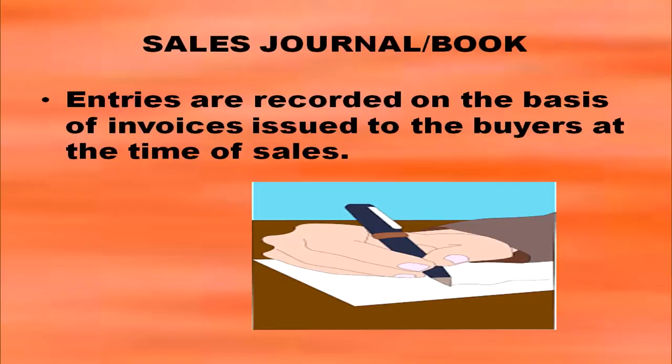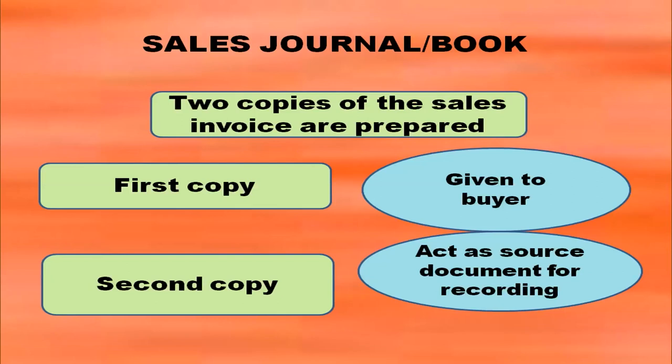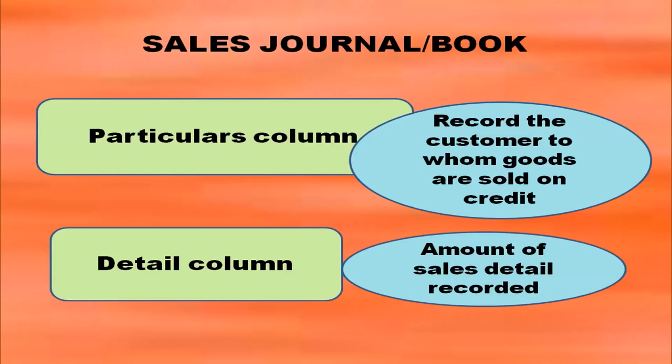Entries are recorded on the basis of invoices issued to the buyers at the time of sales, and two copies of the sales invoice are prepared. The first copy is given to the buyer and the second copy acts as a source document for recording. In the sales book we have a particulars column where you record the name of the customer to whom goods are sold on credit, and in the detail column, amount of sales details are recorded.